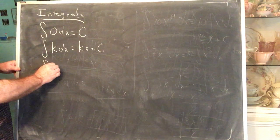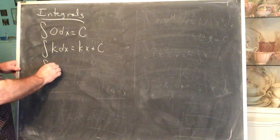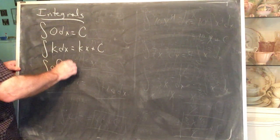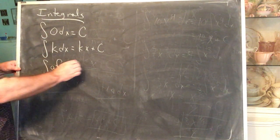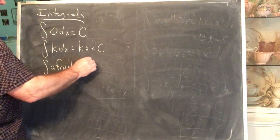What do constant multipliers do? Constant multipliers multiply along.